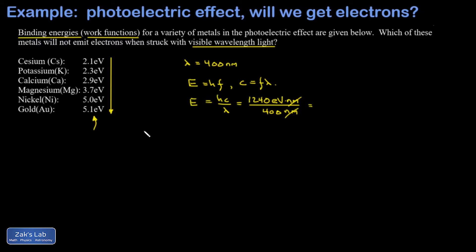This gives me an energy of 3.1 electron volts. So the most energetic visible photons have an energy of about 3.1 electron volts.